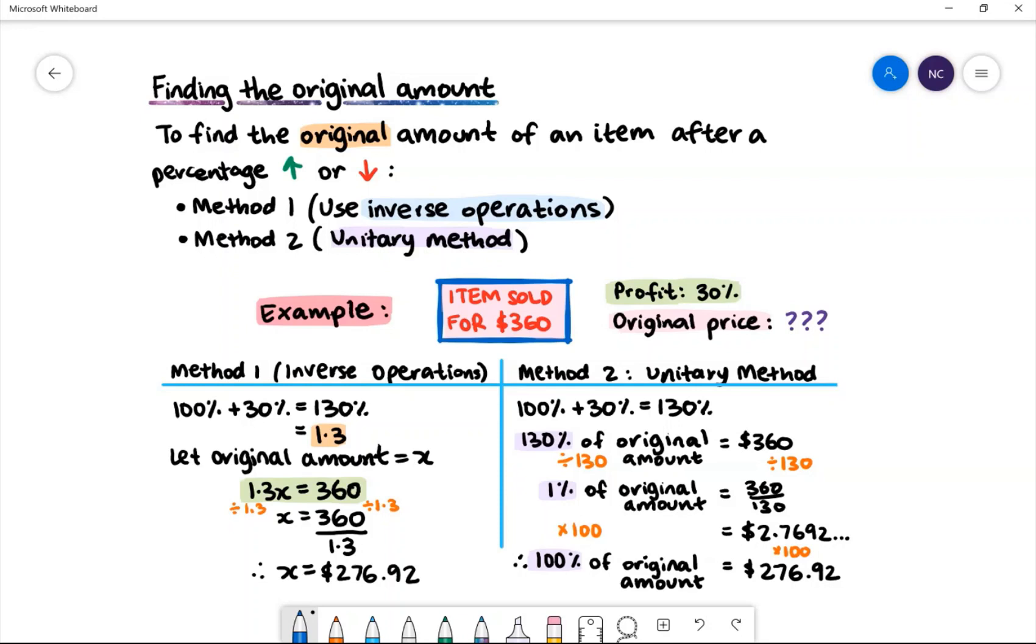Method two uses the unitary method. Again, 100% plus 30% equals 130%. 130% of the original amount is 360. We want to find one percent or one unit.